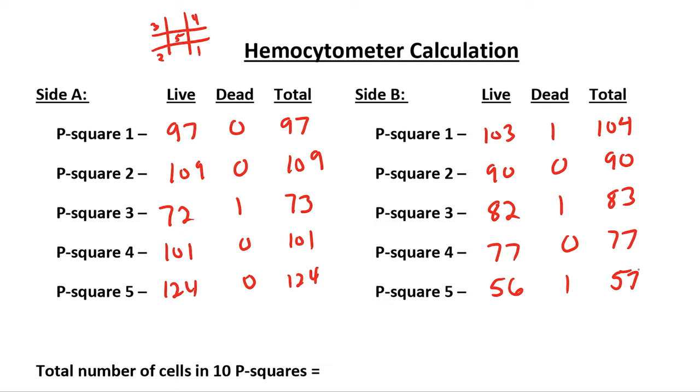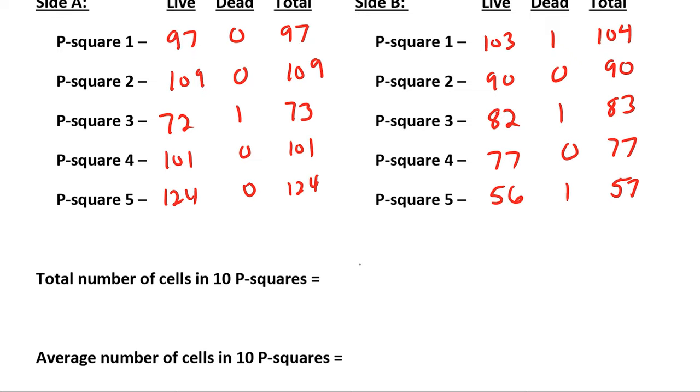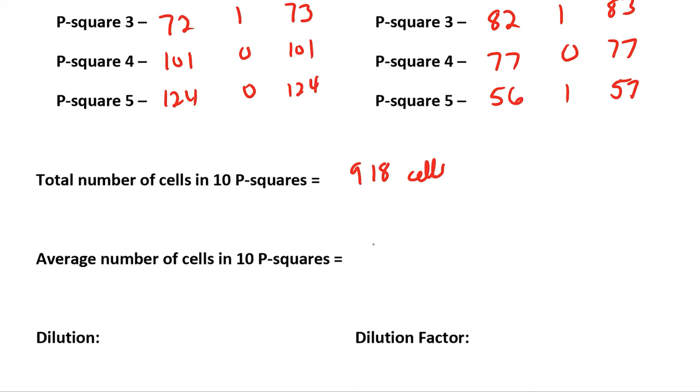As a result, I'm going to add up the total cells in all 10 squares. When we do that, we counted 918 cells in 10 squares. We're going to take an average in the 10, so 918 cells divided by 10 squares, so we have 91.8 cells averaged in 10 P-squares. Now we know the number of cells in a single P-square. Now I need to look at my dilution and the volume.